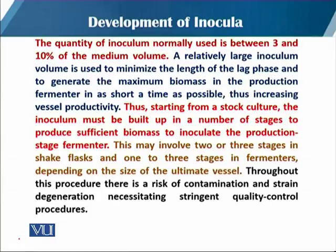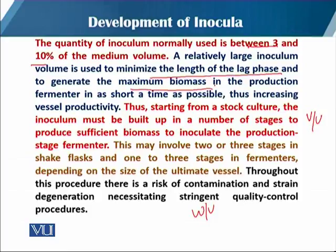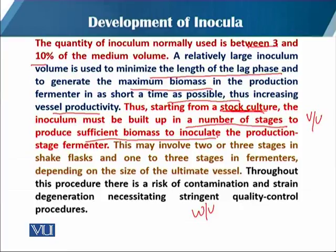As for the quantity of inoculum, normally 3 to 10 percent of the medium volume is used. It is important to be clear whether this is volume over volume or weight over volume, and whether it is measured as wet mass or dry mass. A relatively large inoculum volume is used to minimize the length of the lag phase and to generate maximum biomass in the production fermenter in as short a time as possible, thus increasing vessel productivity. Starting from a stock culture, the inoculum must be built up in stages to produce sufficient biomass to inoculate the production fermenter.